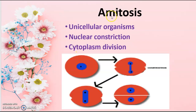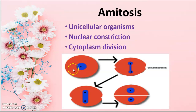This is the process of amitosis. It mostly occurs in unicellular organisms, that is single-celled organisms, which undergo amitosis type of cell division. Here two steps occur: first is nuclear constriction, followed by cytoplasm division. Finally, two daughter cells are produced.